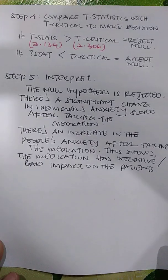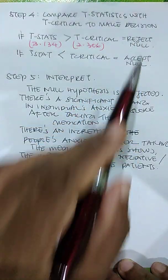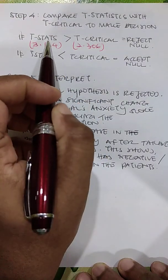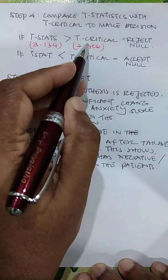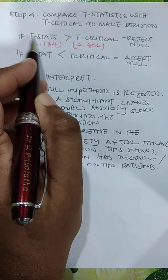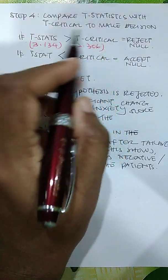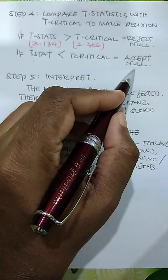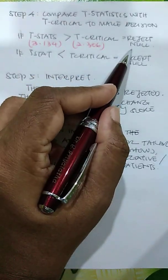Step 4 is to compare the T statistic with the T critical to make a decision. If the T statistic is greater than the T critical, we reject the null. If it is less than the T critical, we accept the null. In this case, our T statistic of 3.134 is greater than the T critical of 2.306, so we reject the null hypothesis.